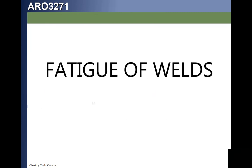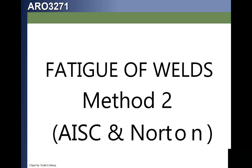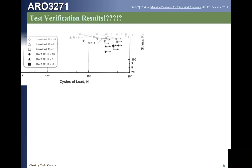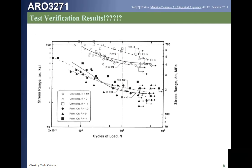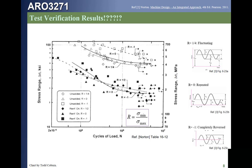Method 2 is completely different. It is developed in Norton's text and is also the American Welding Society method. Looking at the chart, the vertical axis shows range stress — the change in stress — as a function of cycles to failure. We also see the stress ratio R, which is the minimum stress divided by the maximum stress.